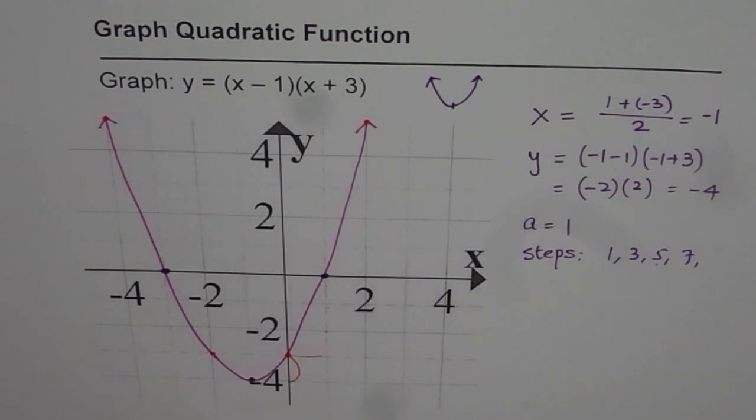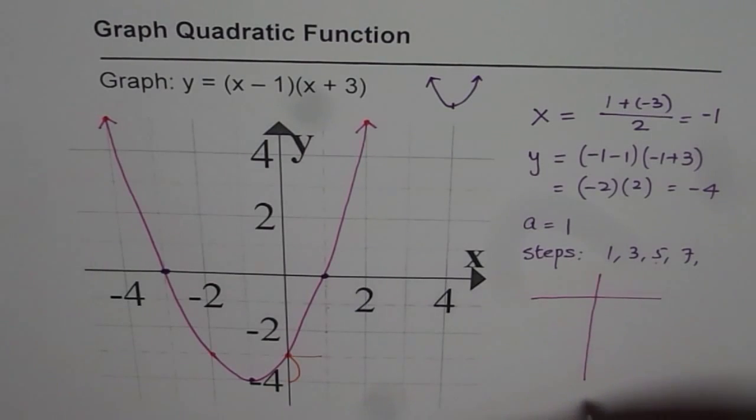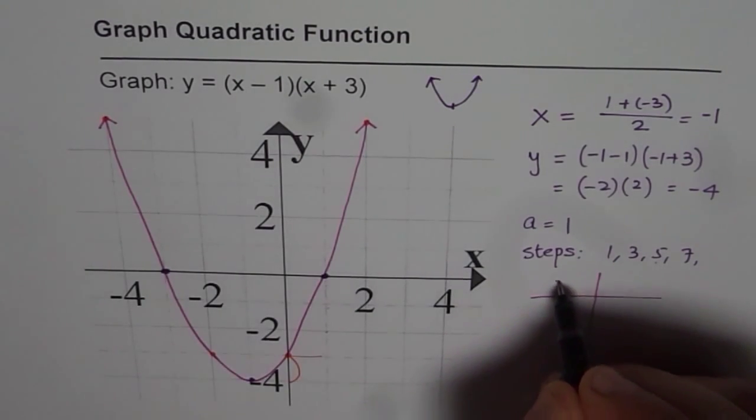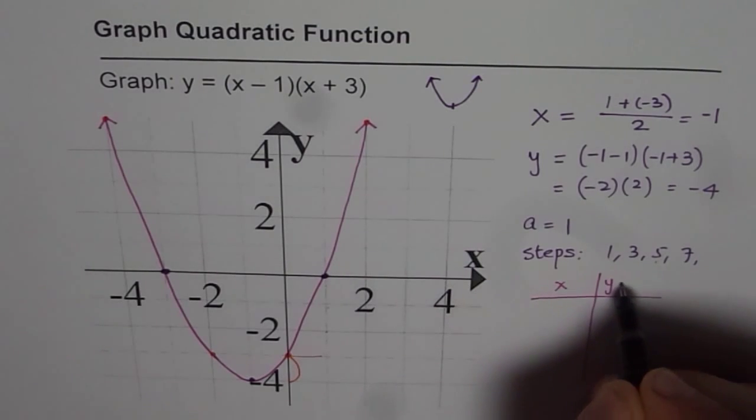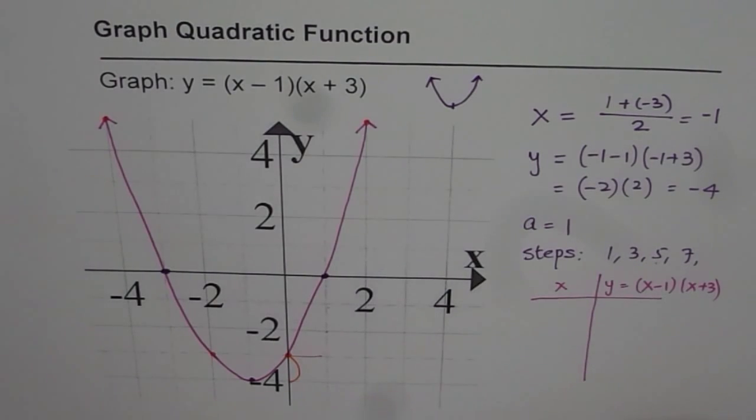Well, for some of you, what you can also do is you can just make a table of values. Select a few points for x, and then y equals x minus 1 times x plus 3. For those values of x, you can find the different values of y. And joining them will give you a good graph.